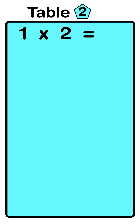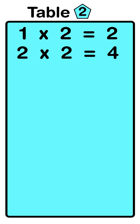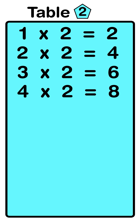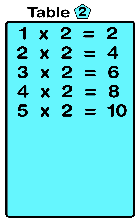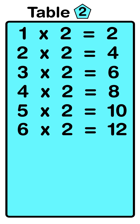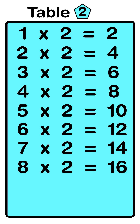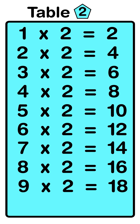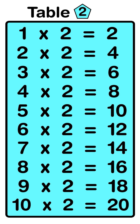One two's are two, two two's are four, three two's are six, four two's are eight, five two's are ten, six two's are twelve, seven two's are fourteen, eight two's are sixteen, nine two's are eighteen, ten two's are twenty.